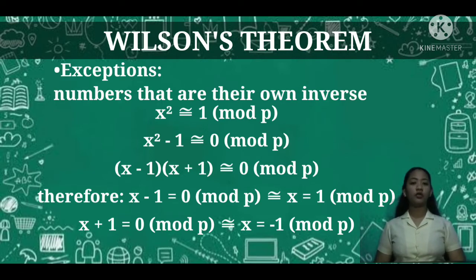Then subtract 1 from each side. We will have x² - 1 ≅ 0 (mod p). Now we will factor: (x-1)(x+1) ≅ 0 (mod p).